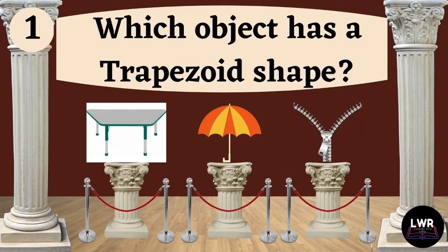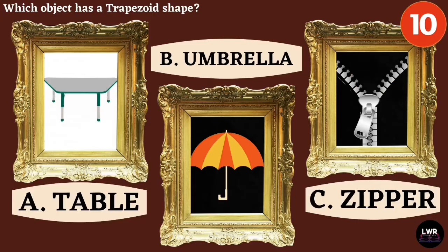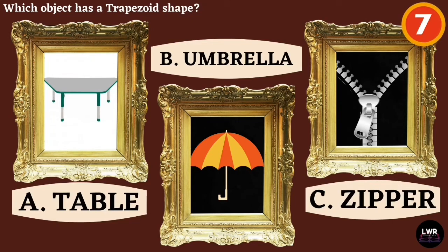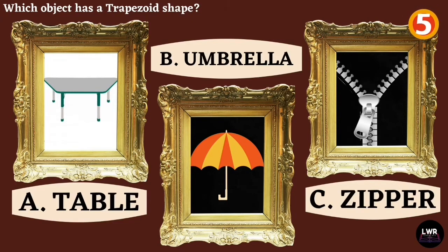Question number one. Which object has a trapezoid shape? Letter A, table. Letter B, umbrella. Or letter C, zipper.